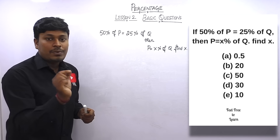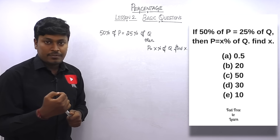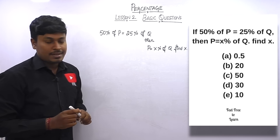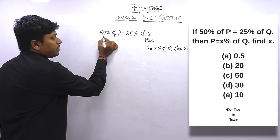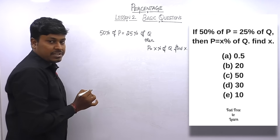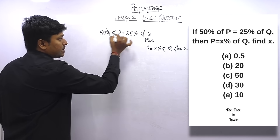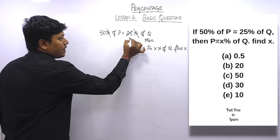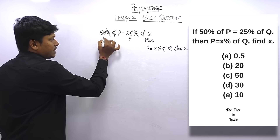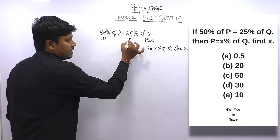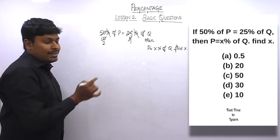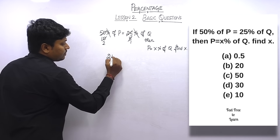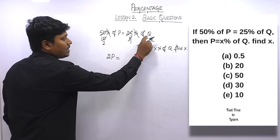Using the first expression, we find the value of p. Then we substitute it into the second expression to cancel q and find x. From 50% of p = 25% of q, cancelling percentages and simplifying: 2p = q, so p = q/2.